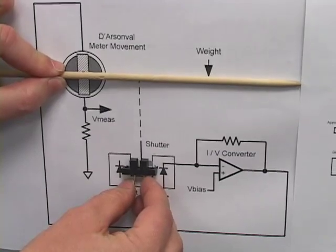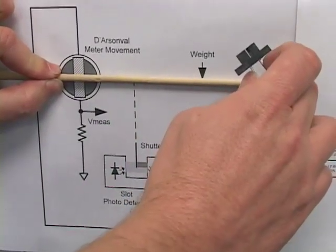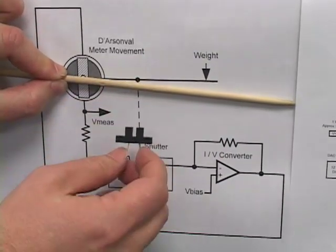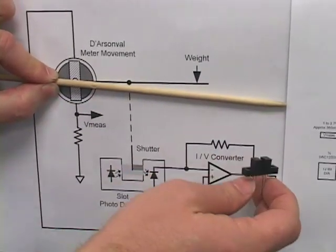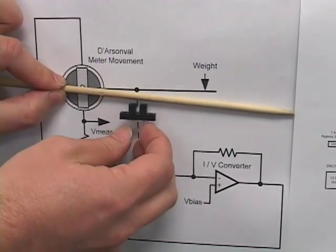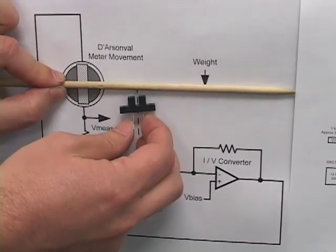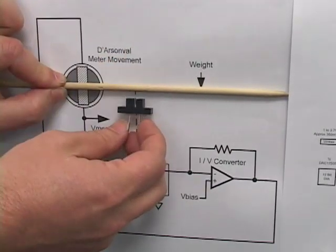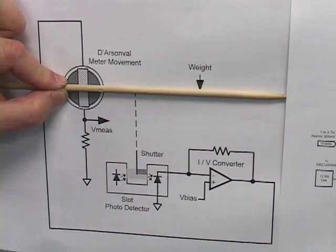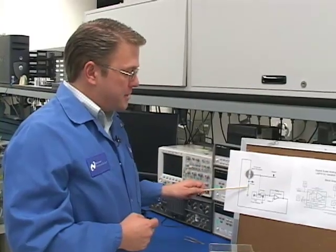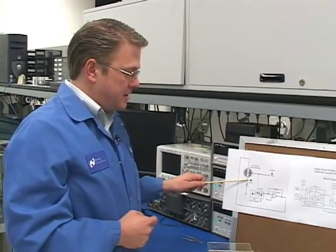So when you want to weigh something, you apply a weight to the beam, which causes the beam to deflect down, which causes a change in the brightness, which causes the amplifier to increase the current into the meter movement, which will move the beam back up. And that extra drive required to move the beam back into the zero position is proportional to the weight applied. So the current through the meter is measured by this resistor and outputs a voltage.